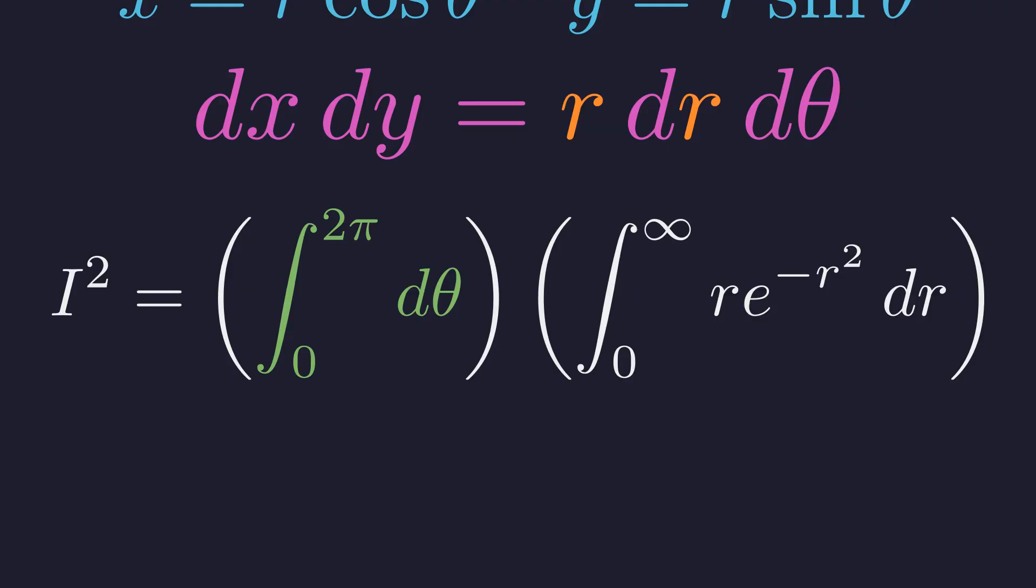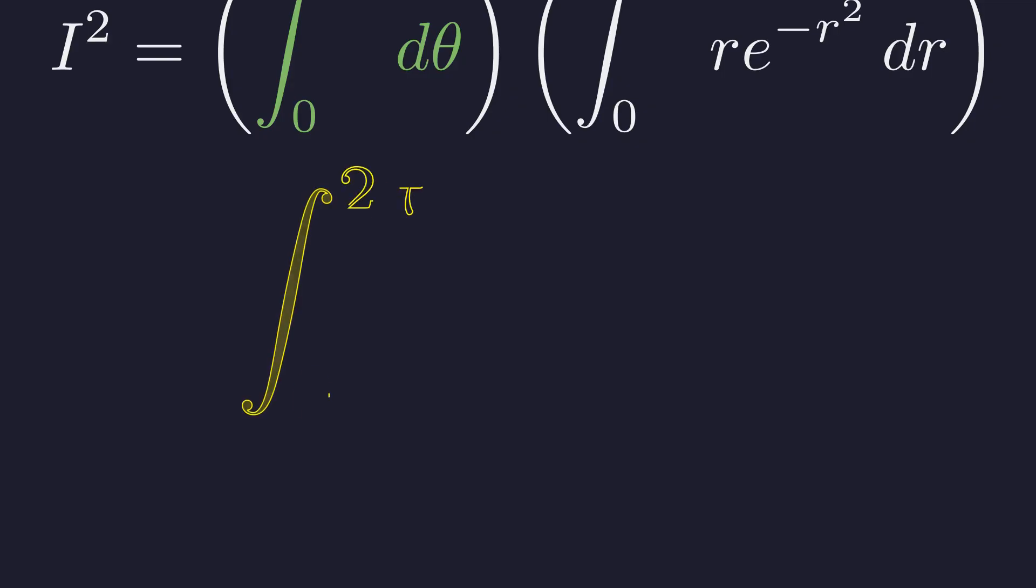The theta integral is straightforward. From 0 to 2 pi, this is just 2 pi.